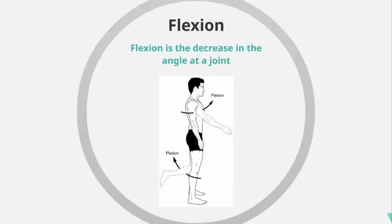If we take a look at flexion, the definition for flexion is the decrease in the angle at a joint. Looking at the elbow, flexion occurs when the arm bends. An example of this would be performing a bicep curl — this would be the upward phase, with the weight coming upwards towards the shoulder so the angle at the elbow is getting smaller.